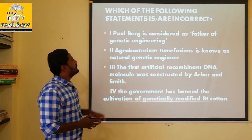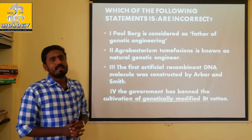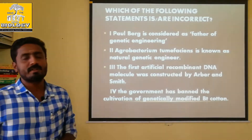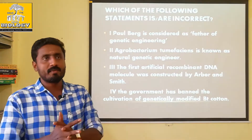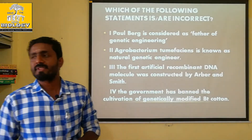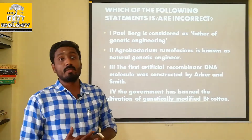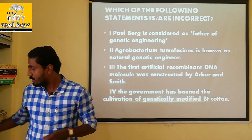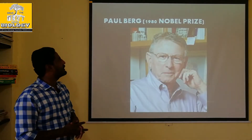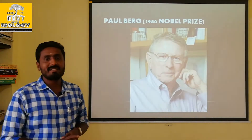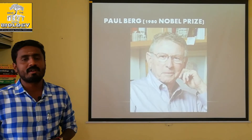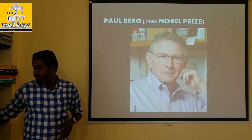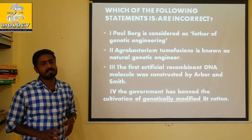First statement: Paul Berg is considered as the father of genetic engineering. This is true. He produced the first recombinant DNA using monkey DNA and lambda bacteriophage. He received the Nobel Prize in 1980 for his work on recombinant DNA in 1971. So he is indeed the father of genetic engineering.